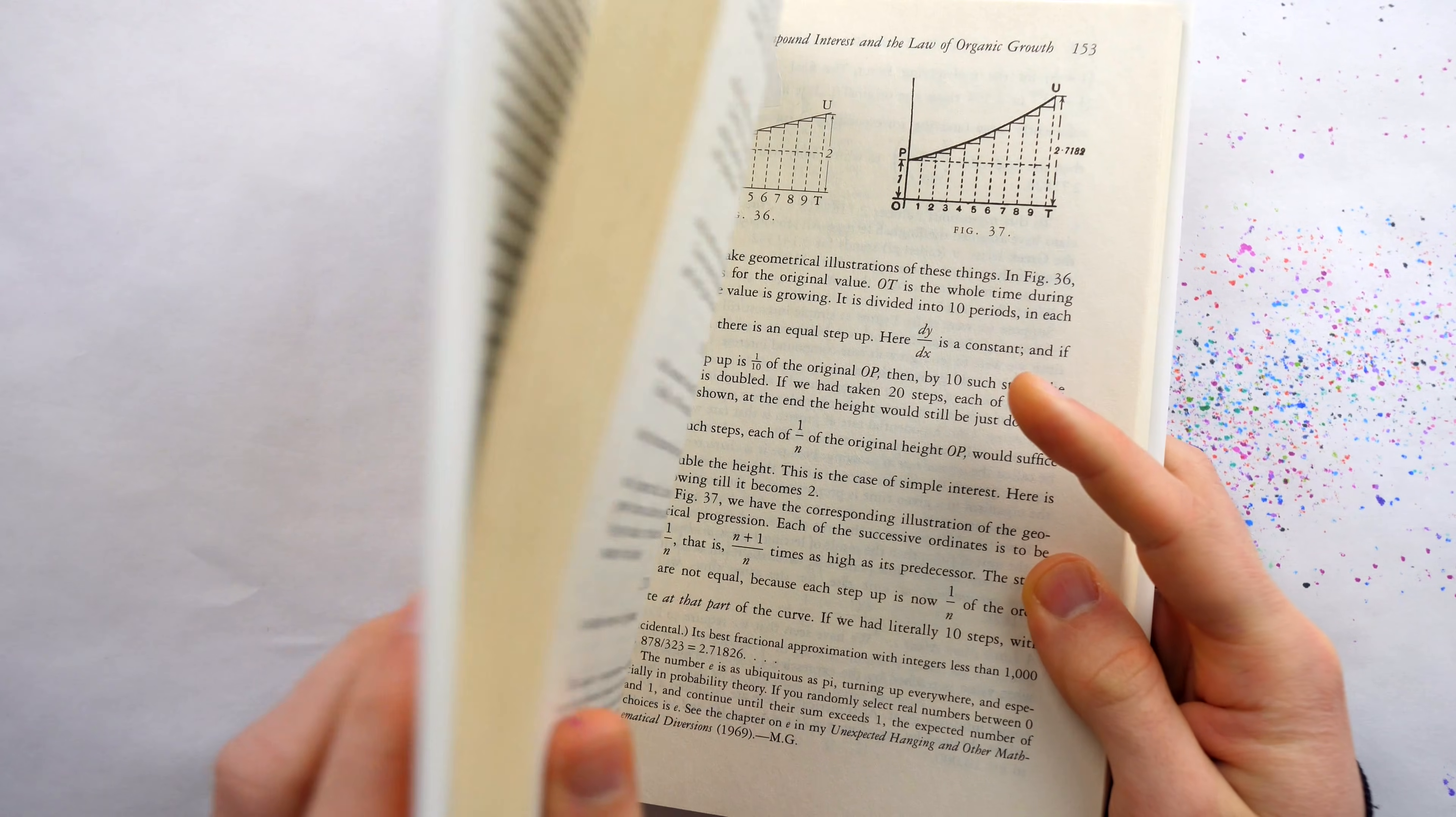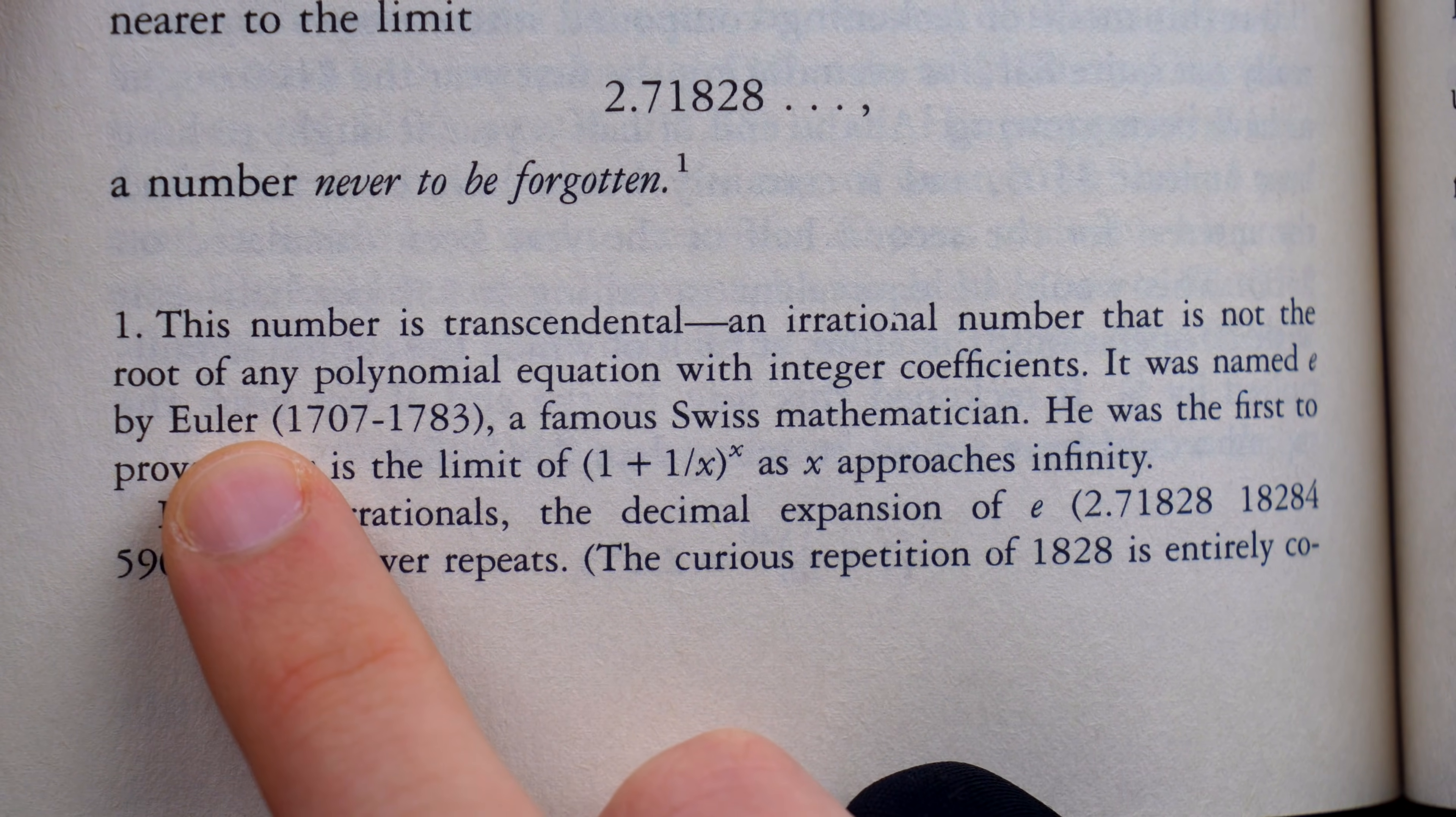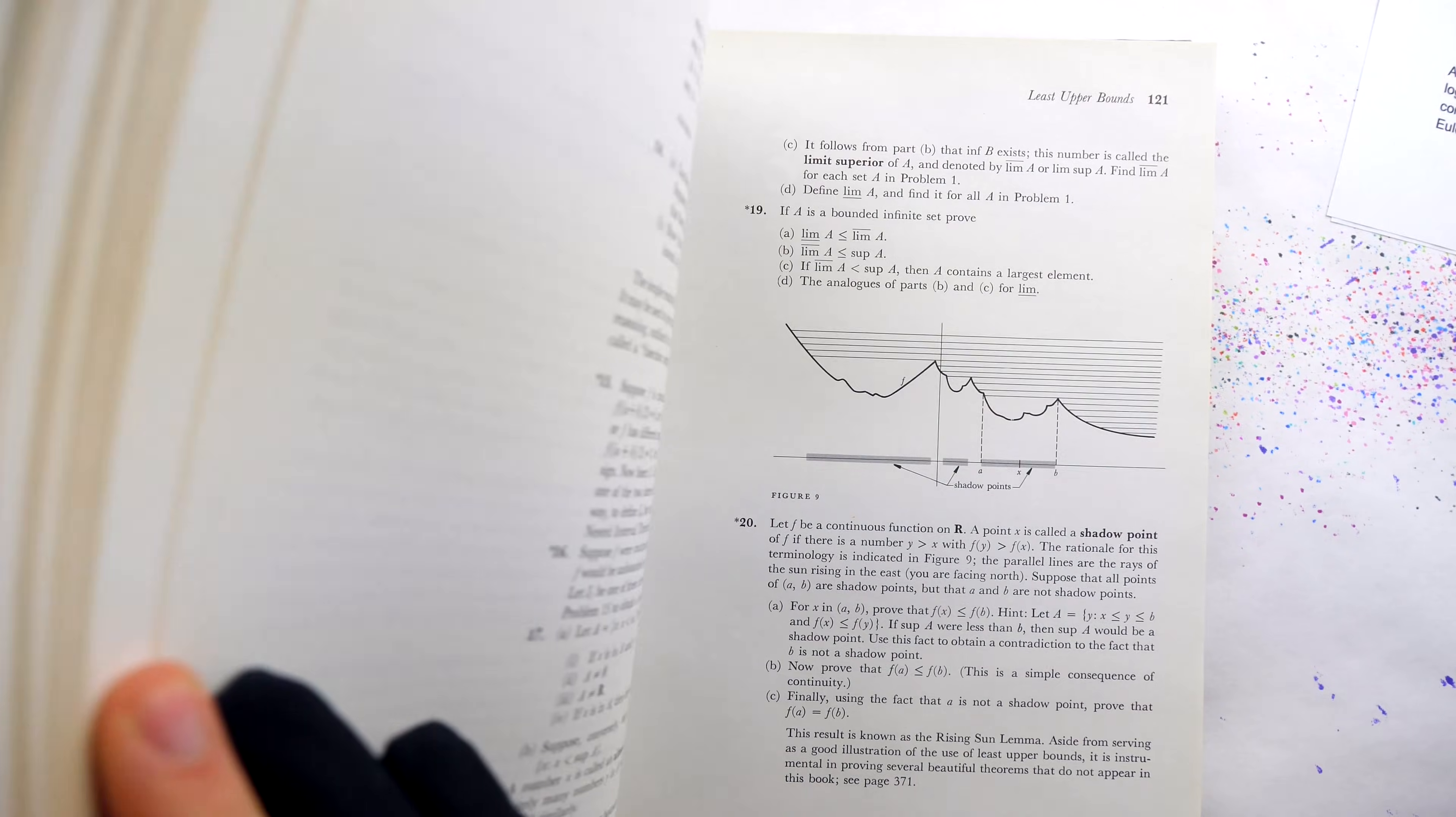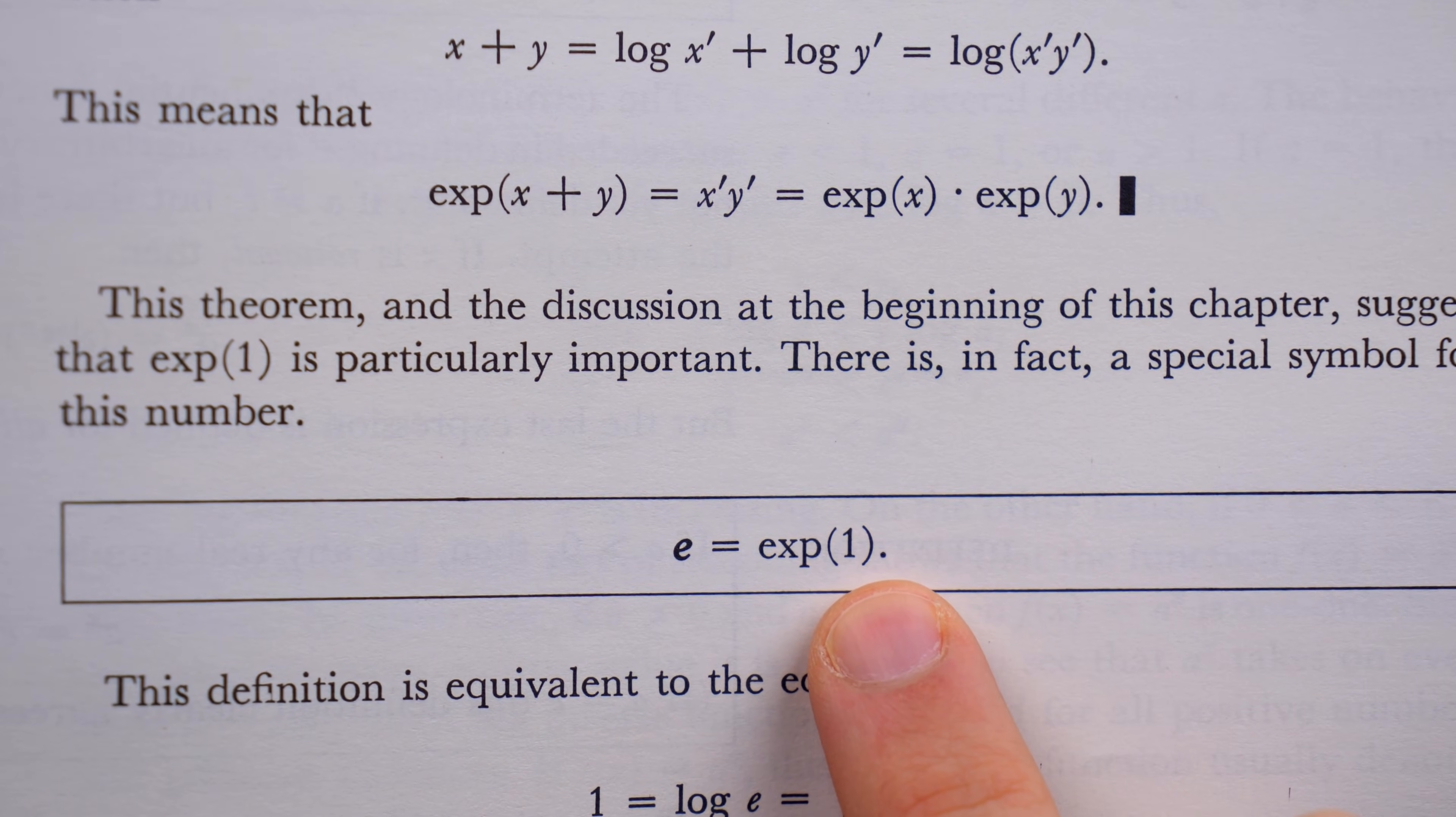Here is Sylvanus Thompson's Calculus Made Easy, a very popular and readable calculus book. Here on page 152, it just says that E was named by Euler, and doesn't discuss a reason. And of course, the first edition of Calculus by Michael Spivak. Here again, they don't discuss the naming, but they do introduce it as the value of the exponential function with an input of one.